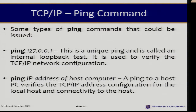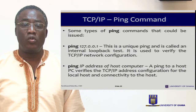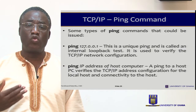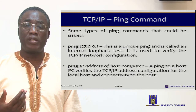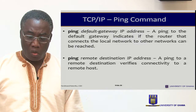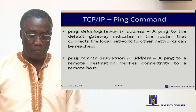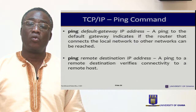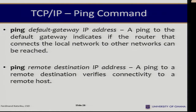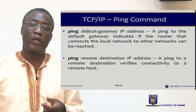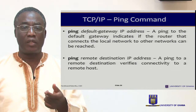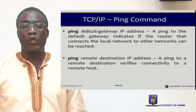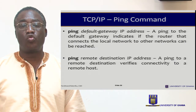The ping 127.0.0.1 is a unique ping called an internal loopback test — it is used to verify the TCP/IP network configuration. Then you can ping the IP address of a host computer, which verifies the TCP/IP address configuration for that local host and connectivity to that host. Next, you could also ping a default gateway IP address — a ping to the default gateway indicates if the router that connects the local network to other networks can be reached. Normally you would have a local gateway through which you access other networks, so a ping to the default gateway verifies whether or not you can reach that gateway. And then, a ping of a remote destination IP verifies connectivity to a remote host.